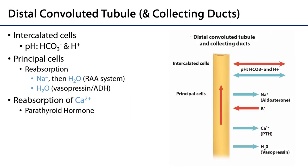The distal convoluted tubule and the collecting duct that follows are sites for both reabsorption and secretion. Within the DCT there are two types of named cells with significant physiological functions: intercalated cells and principal cells. Intercalated cells are responsible for the retention and/or secretion of bicarbonate ions and protons, making them a means of maintaining pH homeostasis within the cardiovascular system.